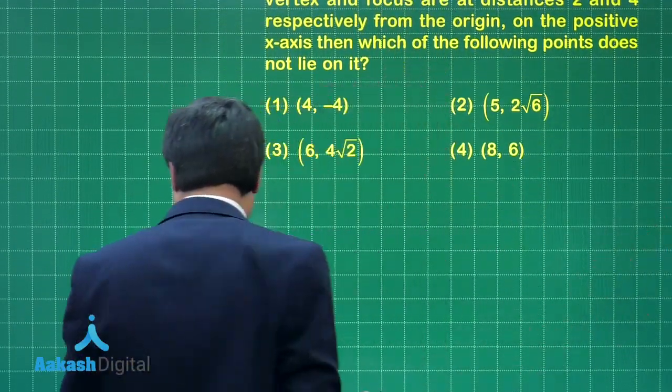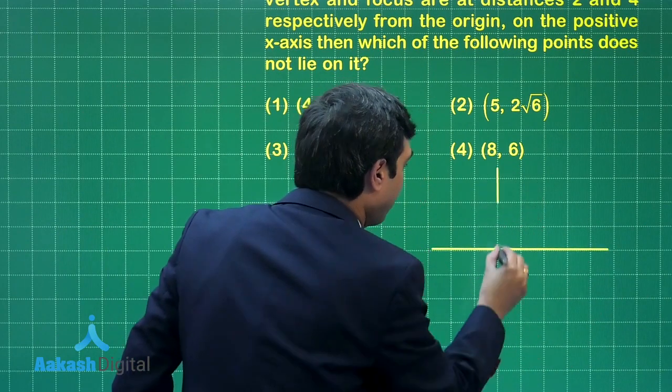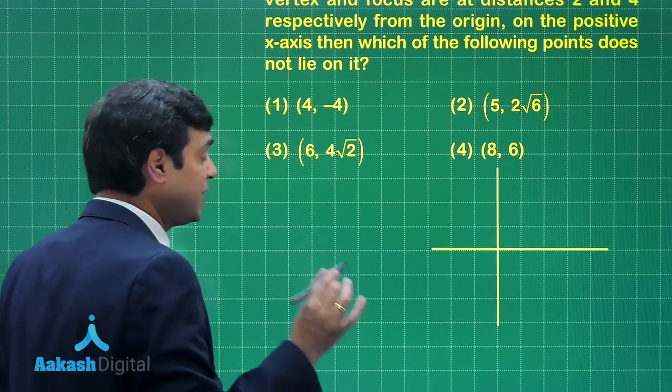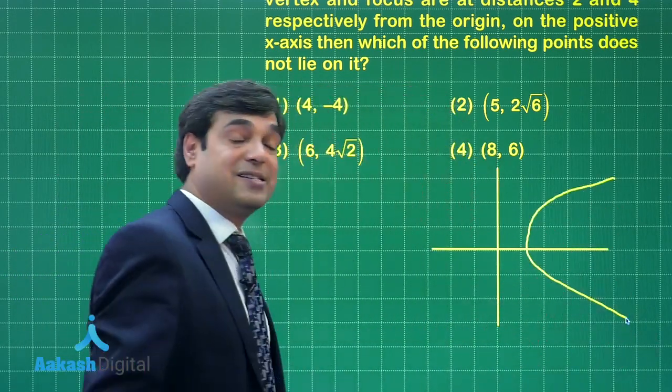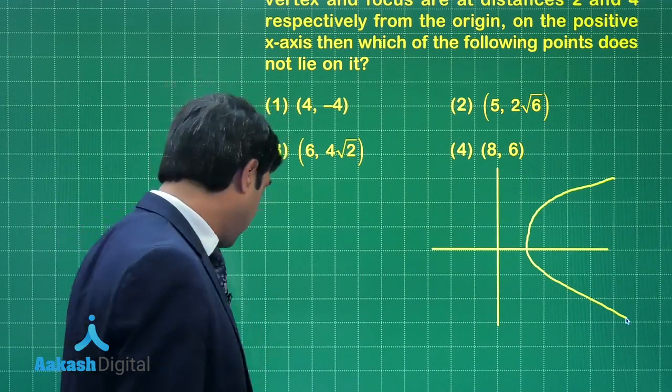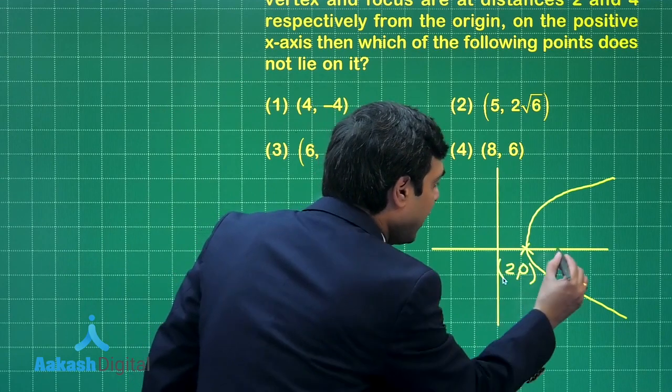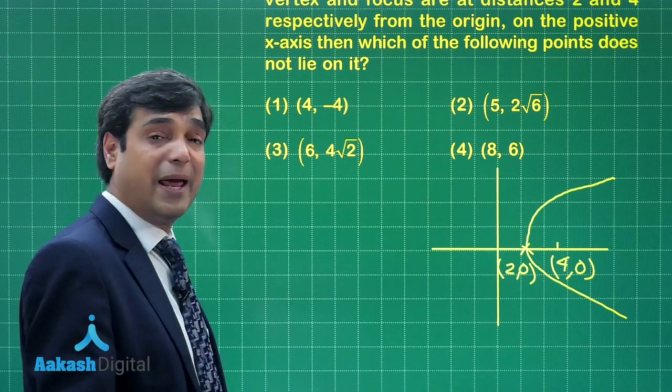A simple question. If you talk about the geometry of it, you can say this is x-axis, y-axis. Since the parabola has vertex and focus at distances of 2 units and 4 units, we have the points as (2,0) and (4,0). What is the equation of the parabola?